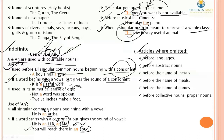Before abstract nouns — nouns that relate to feelings, such as crying, weeping, or laughing — articles are not used. Before the names of metals, before the names of meals, before the names of games, and before collective nouns and proper nouns, articles are not used.